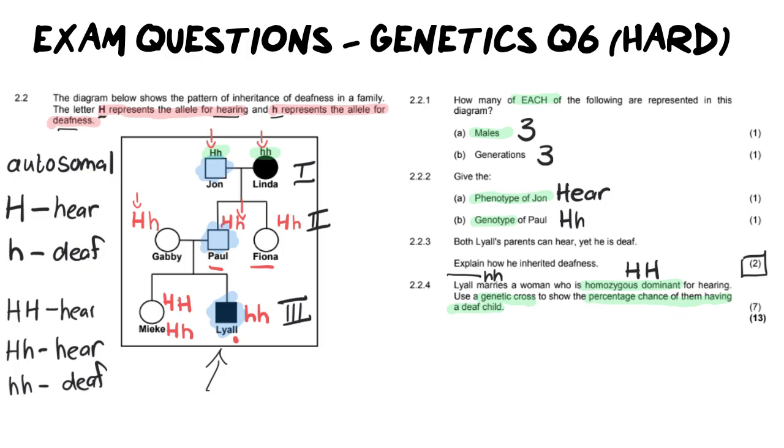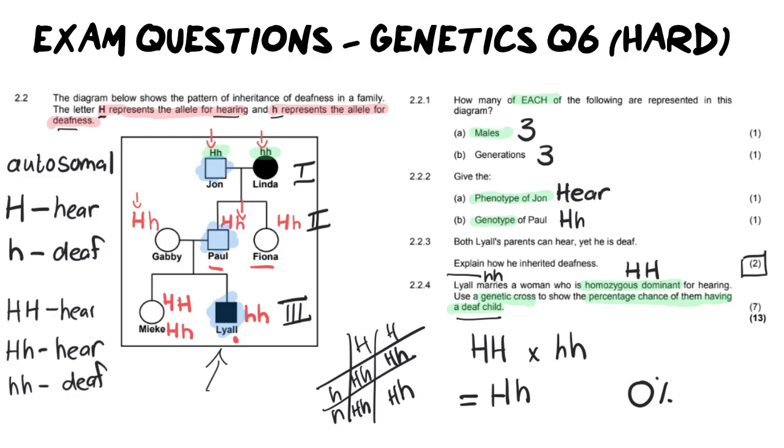And I'm not going to draw the whole cross out to save time. So instead, what I'm going to do is say, if the woman is two capital H's and Lyle is two small h's, I already know that all the children are going to be capital H, small h. And if I do a quick punnett square here alongside, you'll see what I mean. Every single one of the children will inherit at least one capital H, which means what is the chance of them having a deaf child? The chance is zero percent. It is not possible. Because in order for us to have a deaf child, you need two small h's.